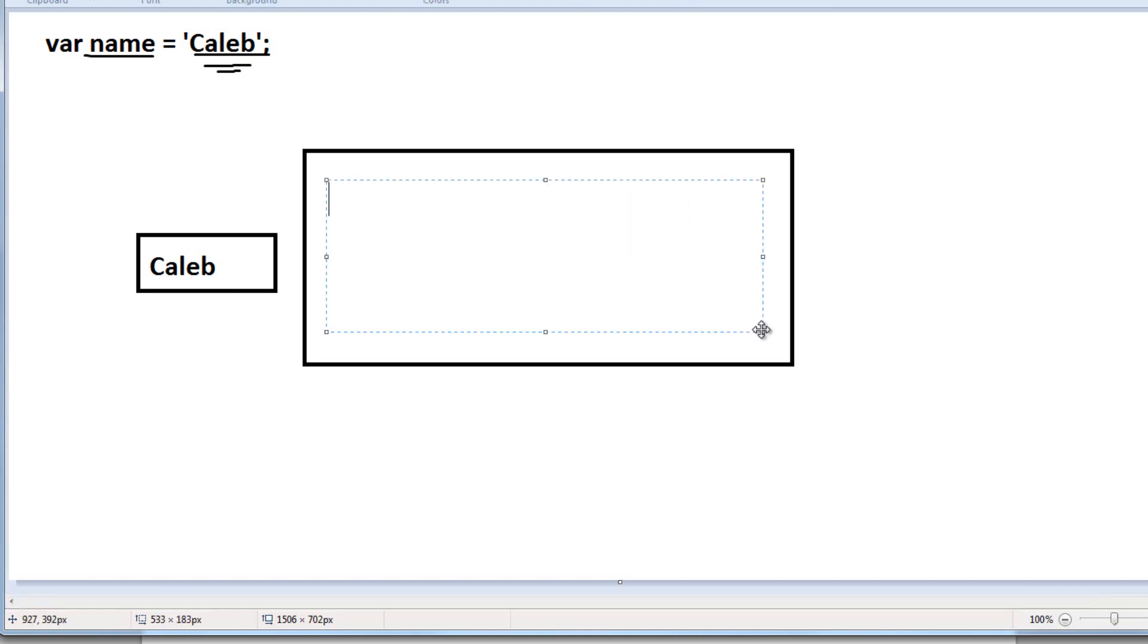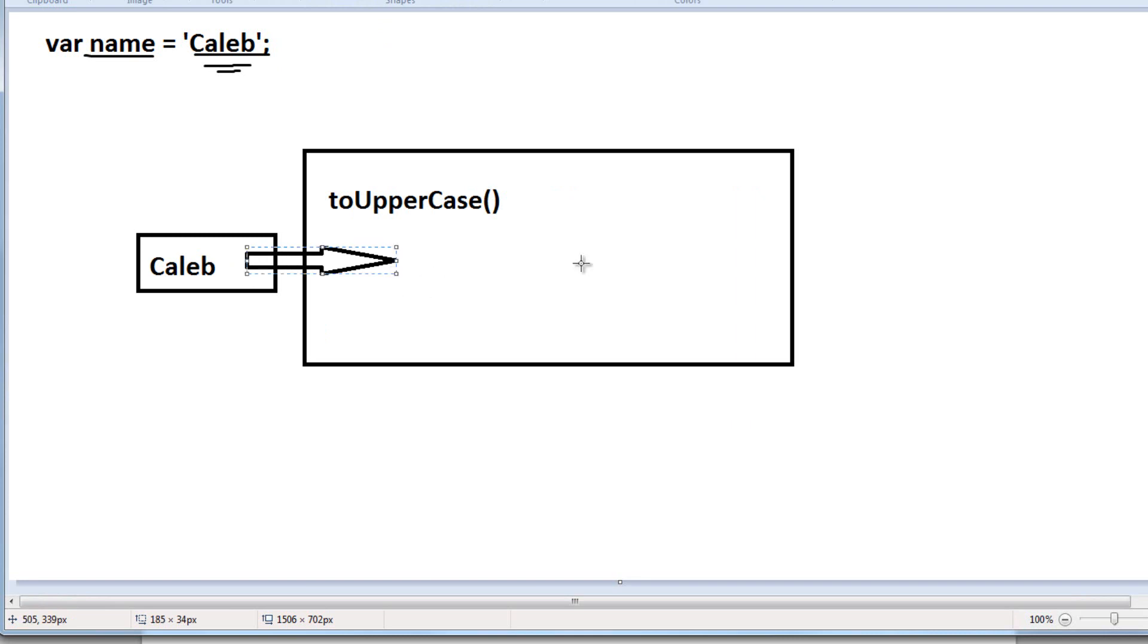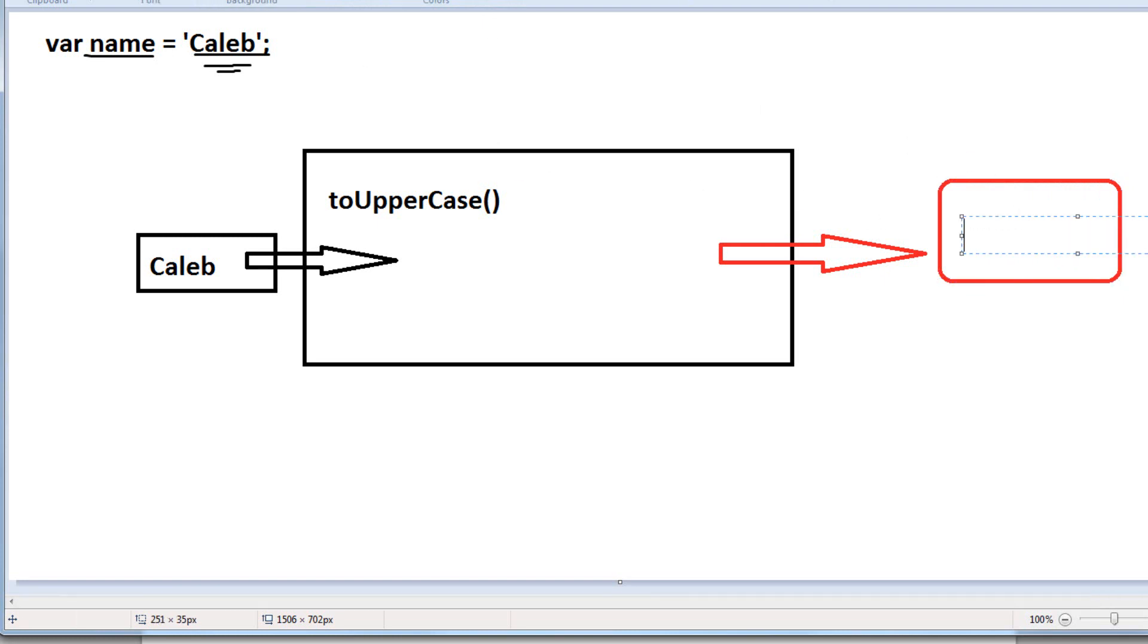And this is the method to uppercase. This method is going to take the value, put it through the method, and it's going to submit out a brand new, improved, elite version of the original value. So now we have Caleb in all uppercase letters.